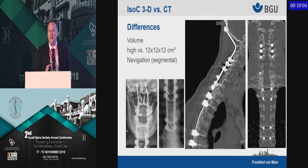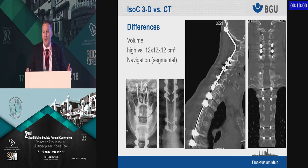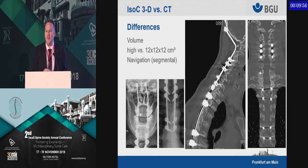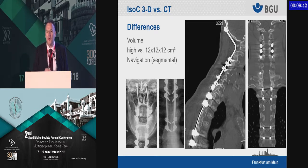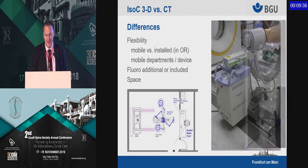There's another difference with regards to volume. If you have a CT scanner, you can depict and navigate huge volumes, while you are very limited in space and volume with your fluoroscopy scanner. For navigation, that means with the CT scanner you do one scan, whereas with the fluoroscopy you have to do multiple scans to get a segmental navigation option.